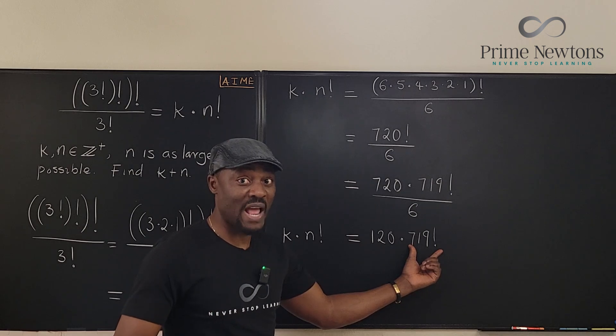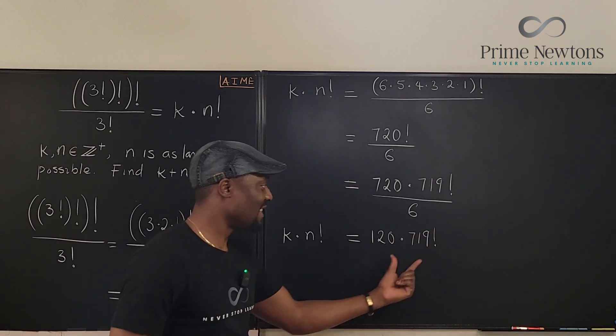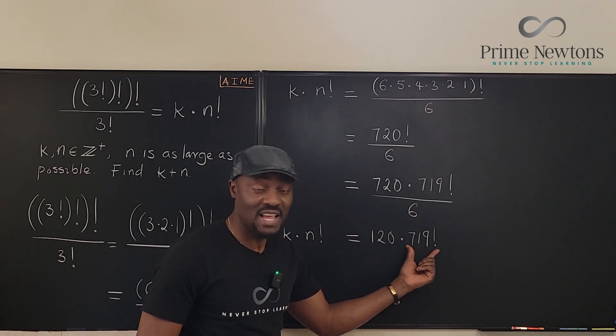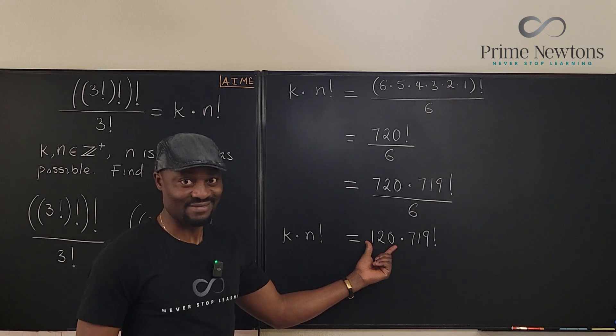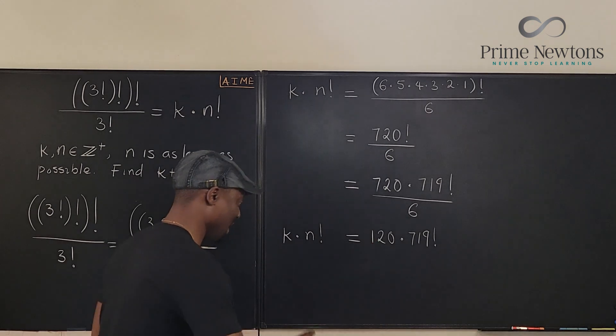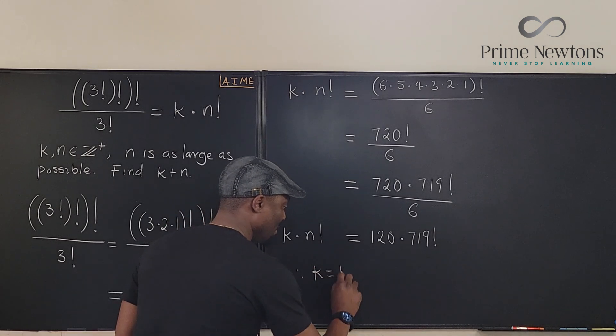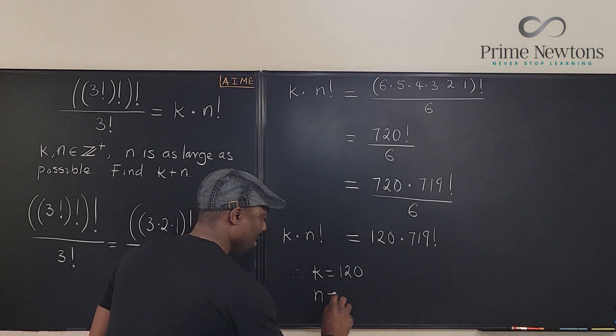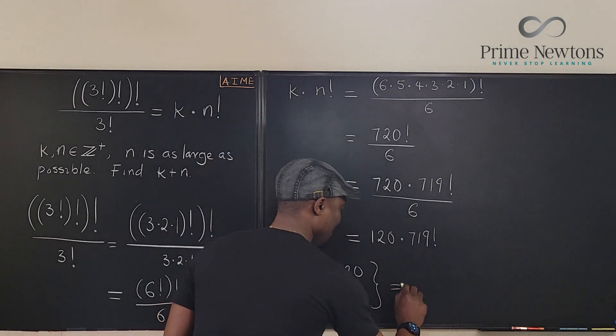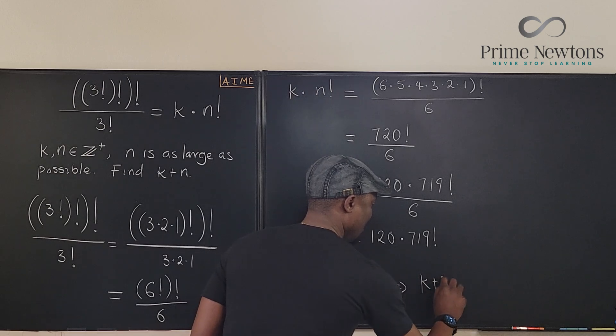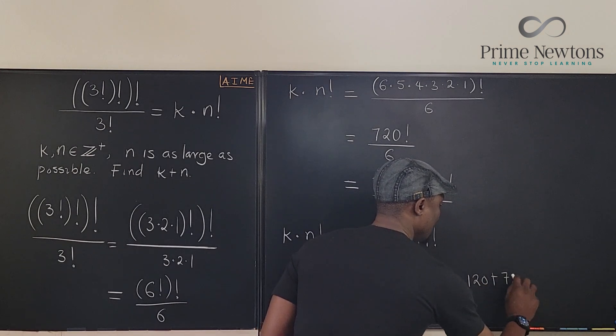We want the factorial to be as large as possible. The only way that would happen is if you stop here. So we can conclude confidently that this is the largest factorial expression we can write and this is the value of K. And that's it. So we can say, therefore, K is equal to 120 and N is equal to 719, which implies that K plus N is equal to 120 plus 719.